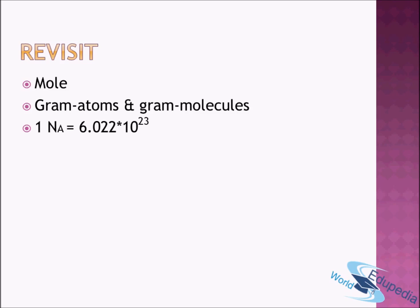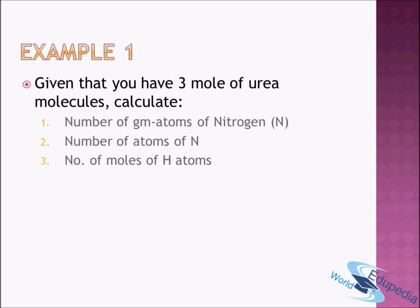In this session we'll look at two different examples to further understand the concept of mole. Example one: you have three moles of urea molecules. From this given information you have to calculate three things — first, the number of gram atoms of nitrogen; second, the number of atoms of nitrogen; and lastly, the number of moles of hydrogen atom.